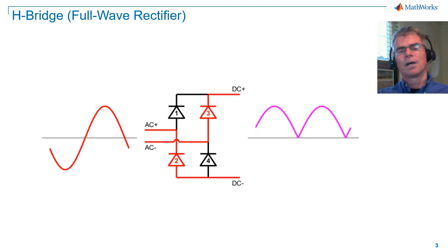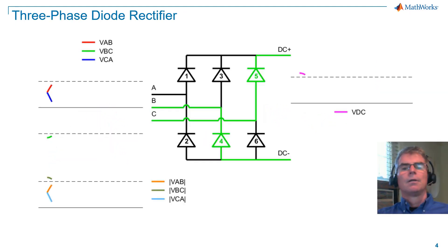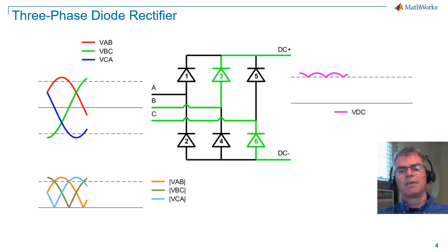Now we'll consider a three-phase diode rectifier. With a three-phase rectifier, we have six diodes. You can see that the three-phase configuration is a natural extension of the H-bridge with the addition of an additional arm with diodes five and six.